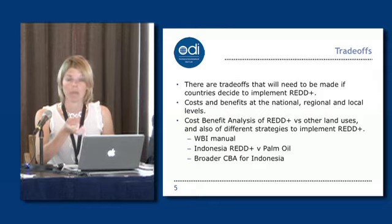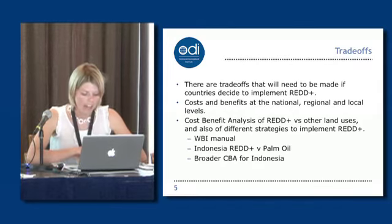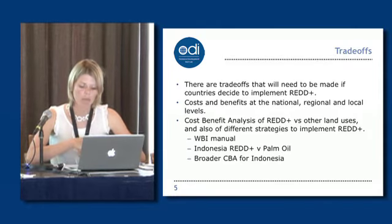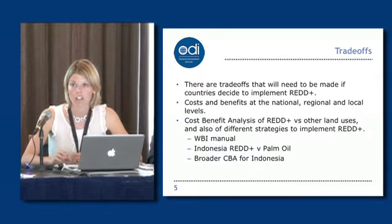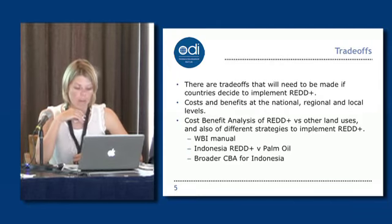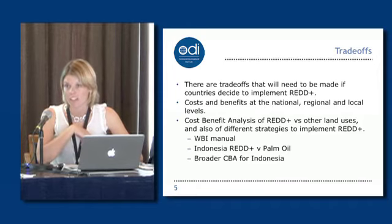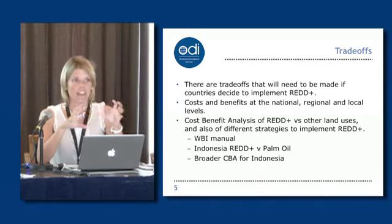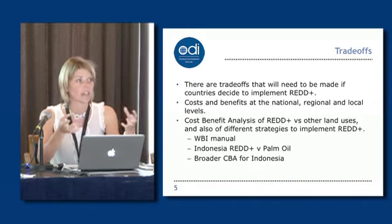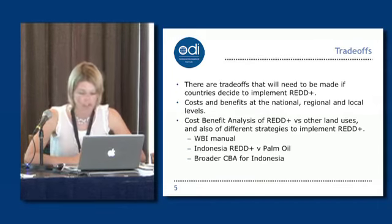Palm oil plantation expansion is a big driver of deforestation in Indonesia. The results of that work showed that a carbon price of $18 to $46 US dollars per tonne would be needed to make REDD in the voluntary market competitive with the palm oil sector. At the moment, the price of carbon is about $4 a tonne, so you can see just that disparity — currently REDD really can't compete with other agricultural land uses.